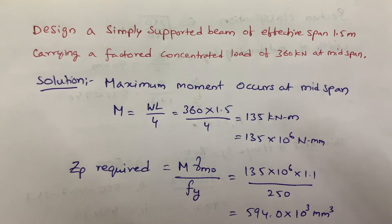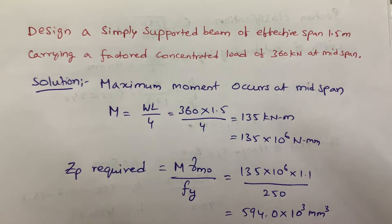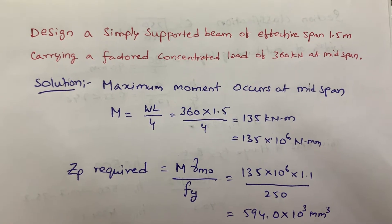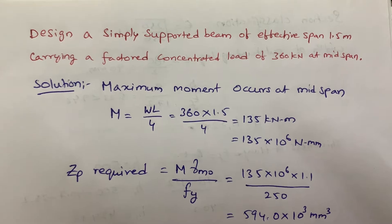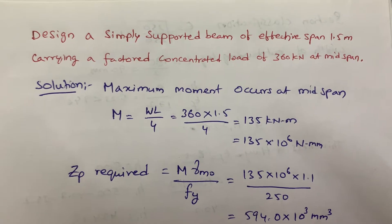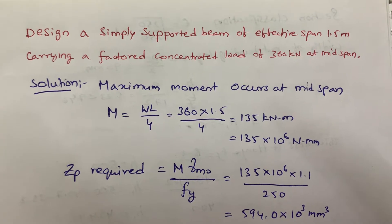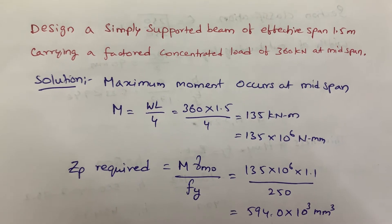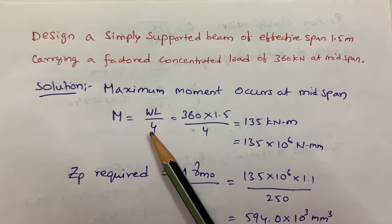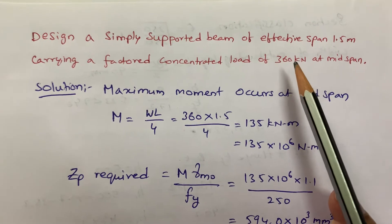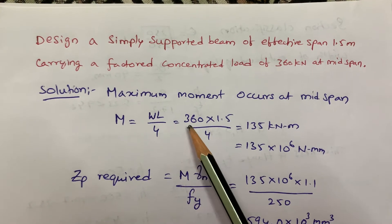In this video I'll explain how to design a simply supported beam of effective span 1.5 meters carrying a factored concentrated load of 360 kN at mid span. We are designing in steel structures. The maximum moment for a simply supported beam with load at mid span uses the formula M = WL/4, that is 360 × 1.5 / 4.